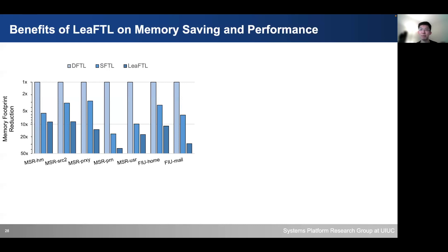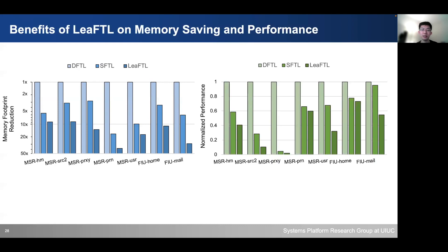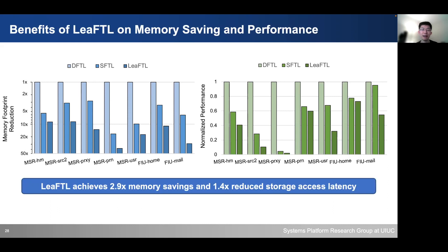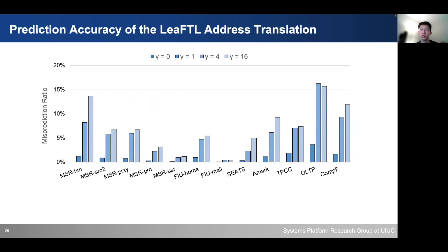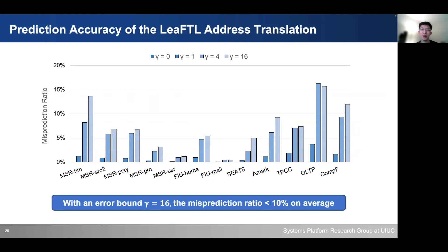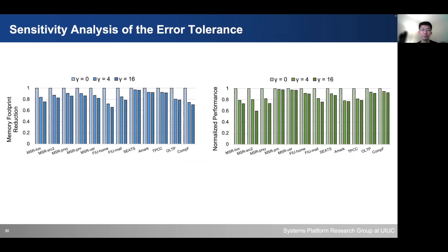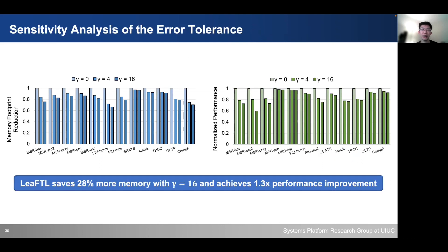LiFTL can capture more mapping table patterns and further reduce the mapping table size. With the saved memory used for a larger data cache, storage performance improves. LiFTL achieved 2.9 times additional memory savings and 1.4 times reduced storage access latency on average. We also showed the low misprediction ratio of LiFTL — with error bound γ=16, the misprediction ratio is less than 10% on average. Sensitivity analysis showed that by increasing the error bound, memory footprint reduces further and storage performance improves by 1.3 times.